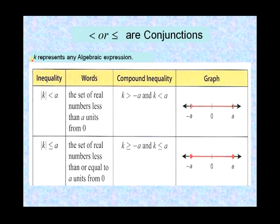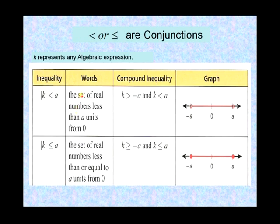In this table, k represents any algebraic expression — for example, 2x minus 3 or 4y plus 2 — and a is a real number. So the absolute value of k is less than a, meaning the set of real numbers less than a units from zero. This can be broken up into a compound inequality: k is greater than the opposite of a, AND k is less than a.